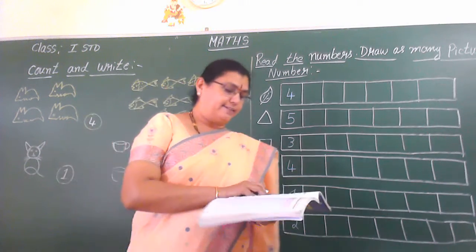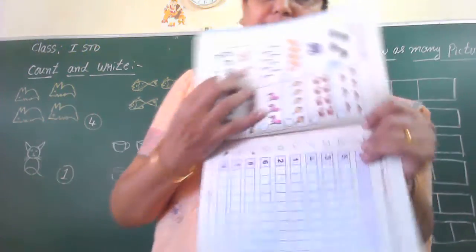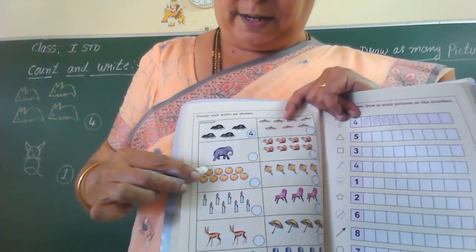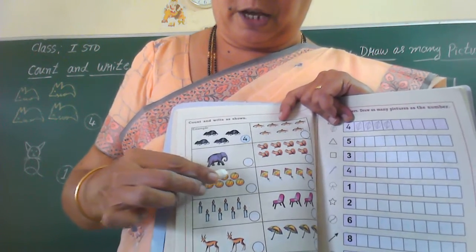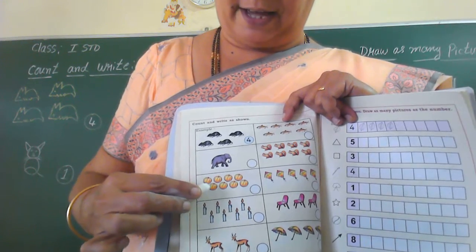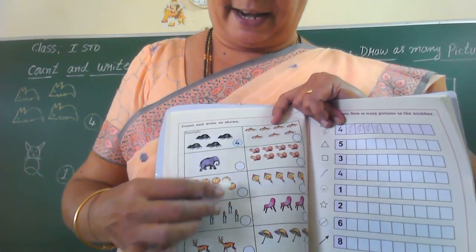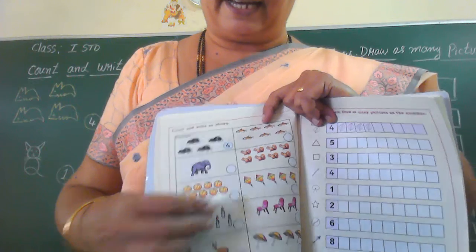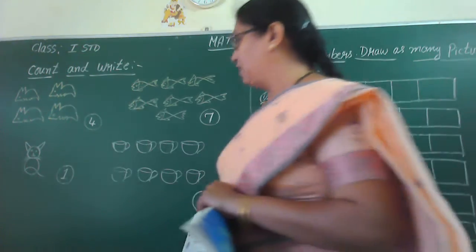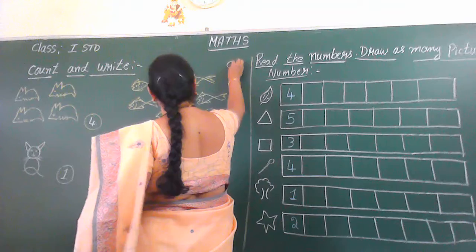Like that only. Next they have given pumpkin. We will count that. One, two, three, four, five, six, seven, eight, nine. In the circle you have to write which number? You have to write nine.